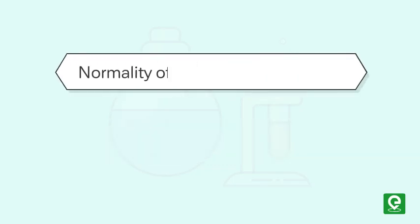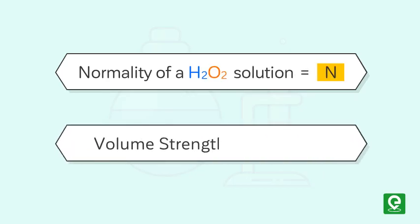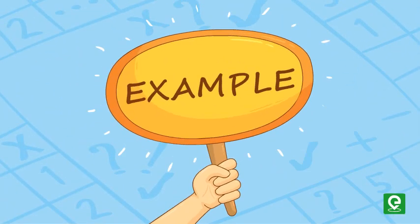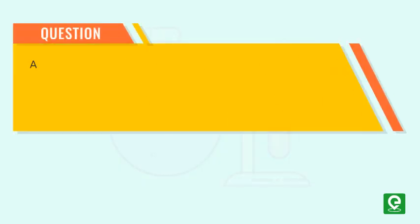Similarly, if normality of a H₂O₂ solution is N, then volume strength of the solution is equal to 5.6 × N. Let's solve a few examples on volume strength of H₂O₂.